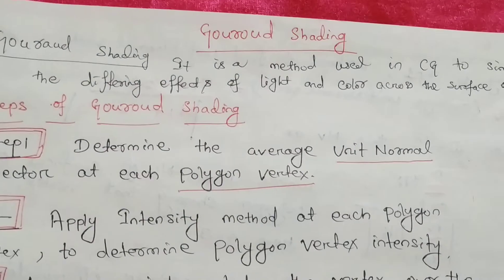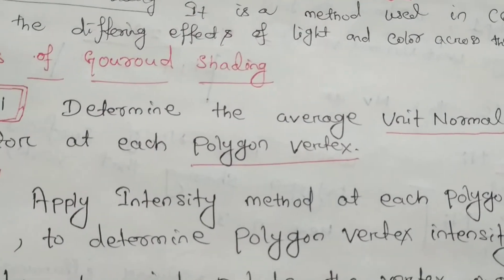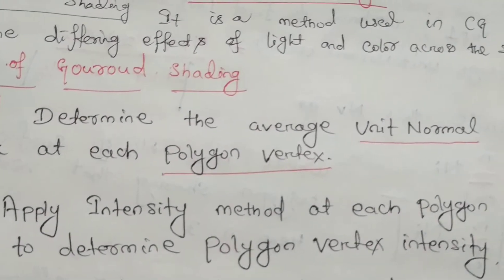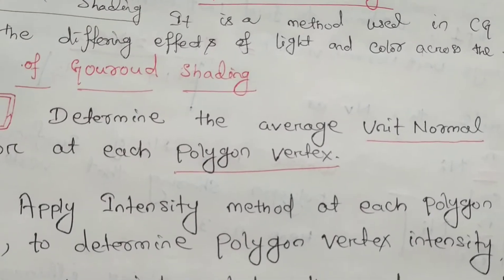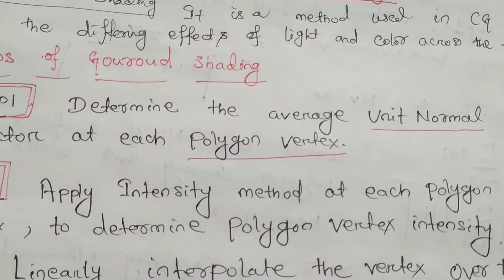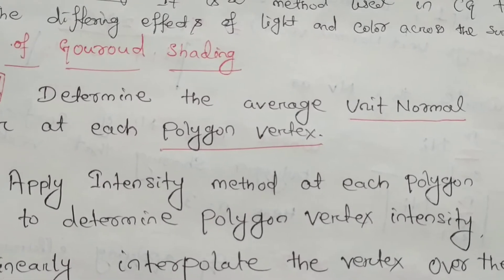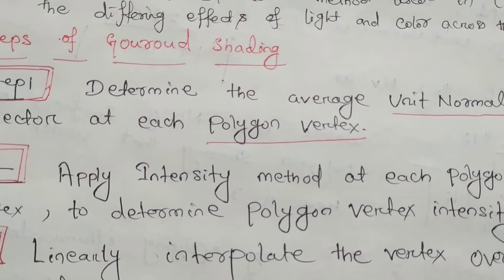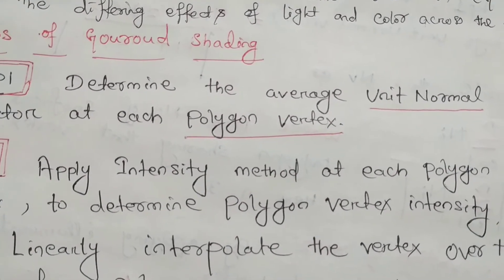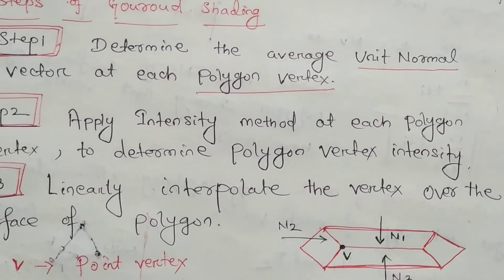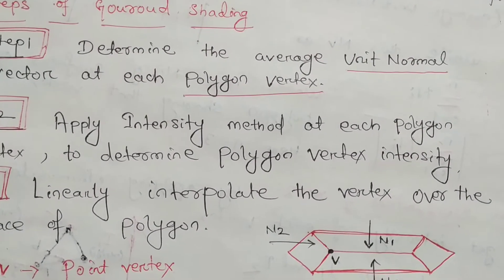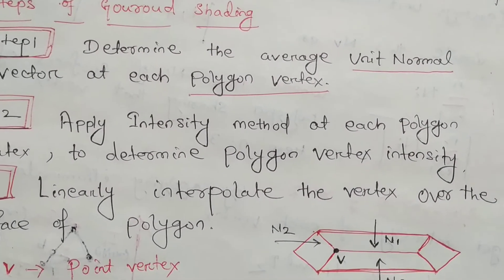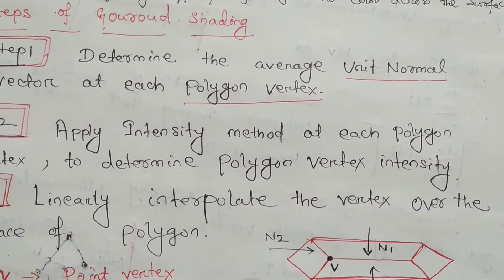There are different steps in Gouraud Shading. First step: Determine the average unit normal vector at each polygon vertex. Step 2: Apply intensity method at each polygon vertex to determine the polygon vertex intensity. Step 3: Linearly interpolate the vertex over the surface of the polygon. We will discuss these three steps.